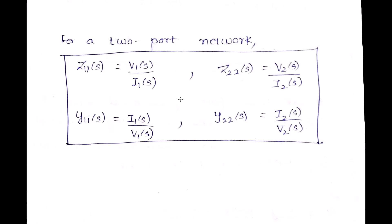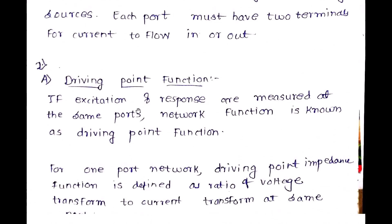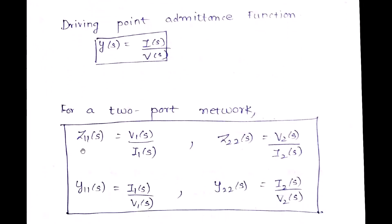The driving point functions are Z11(s), Z22(s), Y11(s), and Y22(s). Z11(s) = V1(s) / I1(s), and Z22(s) = V2(s) / I2(s). When talking about a driving point function, the response is measured at the same port — Z11 is at port 1, Z22 is at port 2, Y11 is at port 1, and Y22 is at port 2.